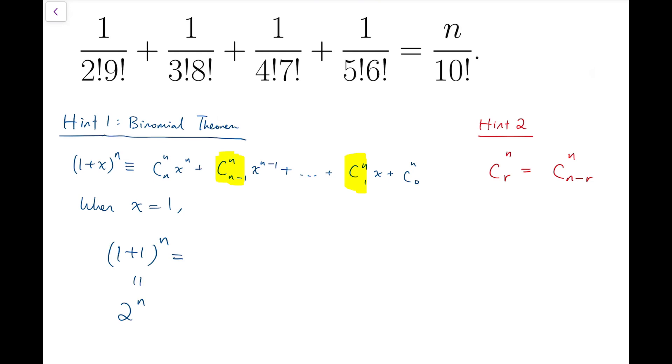n choose n times 1^n, which is 1, plus n choose 1 plus n choose 0. So that means the sum of all these binomial coefficients is equal to exactly 2^n.